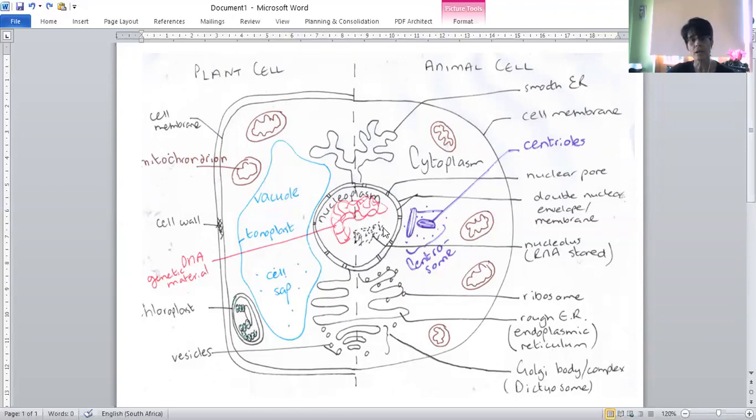Inside the nucleus is a jelly-like substance called nucleoplasm, just like we call the basic substance of the cell the cytoplasm—that's what the organelles are suspended in. Inside the nucleus, there's a region where RNA is stored called the nucleolus. It's not surrounded by a membrane; it's just a storage area for RNA, and you'll learn more about that in Grade 12.